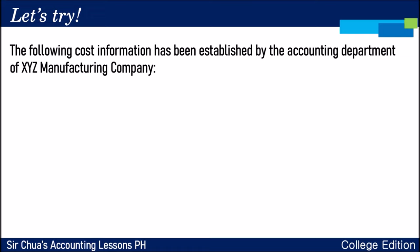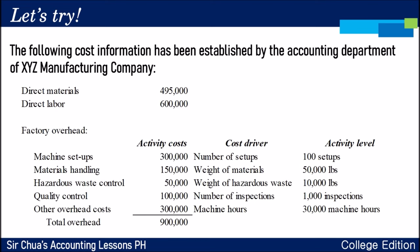The following cost information has been established by the accounting department of XYZ Manufacturing Company. During the period, direct materials used is $495,000 and direct labor used is $600,000. For overhead, the activity cost pools are: Machine Setups at $300,000, Materials Handling at $150,000, Hazardous Waste Control at $50,000, Quality Control at $100,000, and Other Overhead Costs at $300,000.